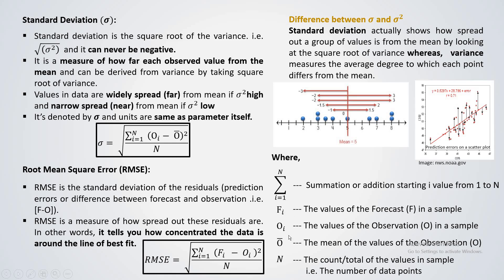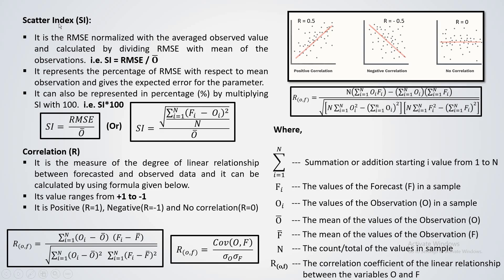In the formula, summation sigma from i equal to 1 to n means adding from the starting i value to n. Coming to the next parameter — scatter index — it is RMSE normalized with the average observed value. You get the scatter index by simply dividing the RMSE by the mean of the observation. It represents the percentage of the RMSE with respect to the mean of the observations, giving the expected error of the parameter. Multiplying by 100 gives the scatter index as a percentage.